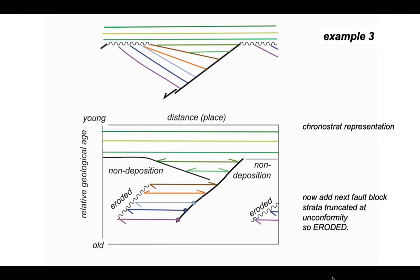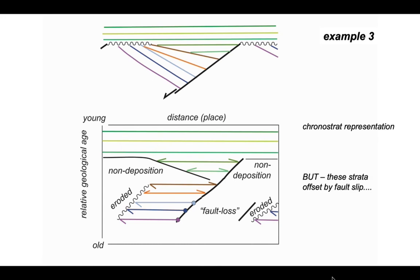Originally the purple and blue horizons continued across the diagram, but not all the way because they've been offset by the fault. Adding the fault to this side of the diagram, the gap between the fault's right-hand and left-hand positions on the chronostrat diagram is called fault loss. The purple and blue horizons have been pulled apart by faulting, leaving a gap in their horizontal extent. This fault loss also continues within the orange and brown units, which are rotated in the fault block — they are the syn-rift deposits. Fault loss and erosion are distinct from non-deposition.